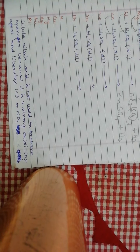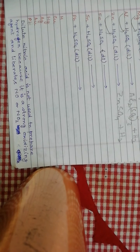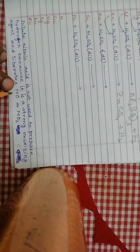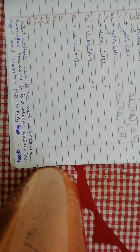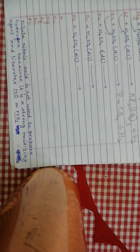Dilute nitric acid does not produce hydrogen gas when it reacts with metals, because it is a very strong oxidizing agent. Instead of hydrogen, it produces NO (nitric oxide) or NO₂ (nitrogen dioxide) gas. That is why we do not use nitric acid to produce hydrogen gas. Thank you.